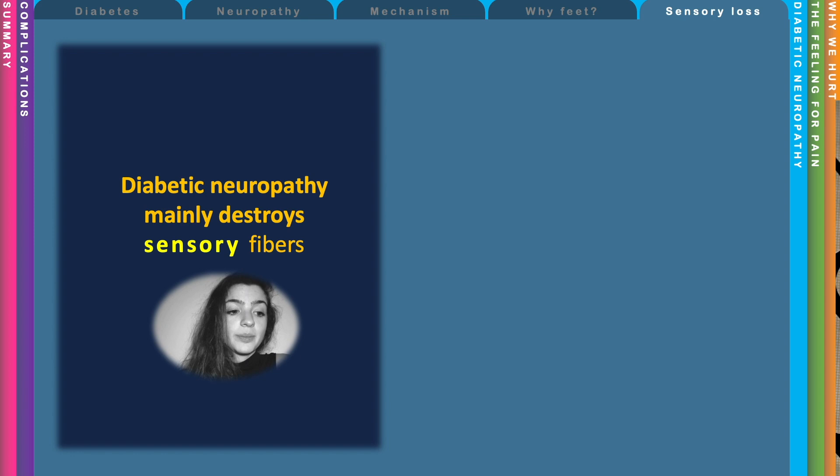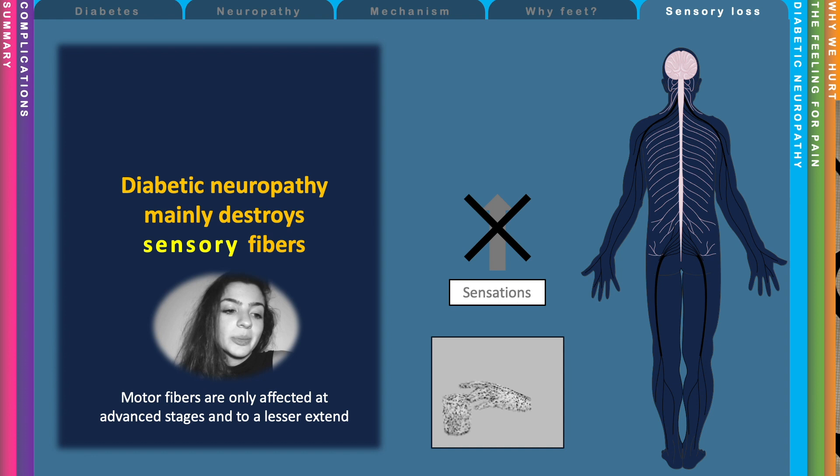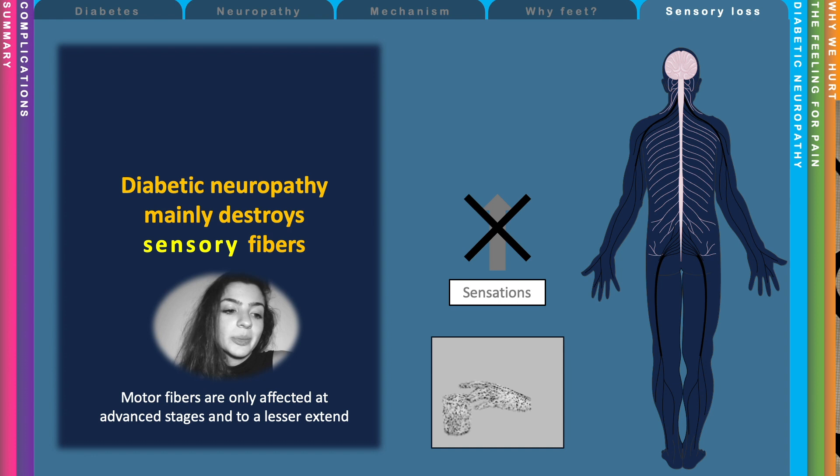For example, motor fibers are responsible for the reflex response of retracting the foot. Diabetic neuropathy mainly destroys sensory fibers, so we lose sensation. Motor fibers are only affected at advanced stages and to a lesser extent. But if we cannot feel something, we cannot respond to it either — so insensitivity also means unresponsiveness to harm.